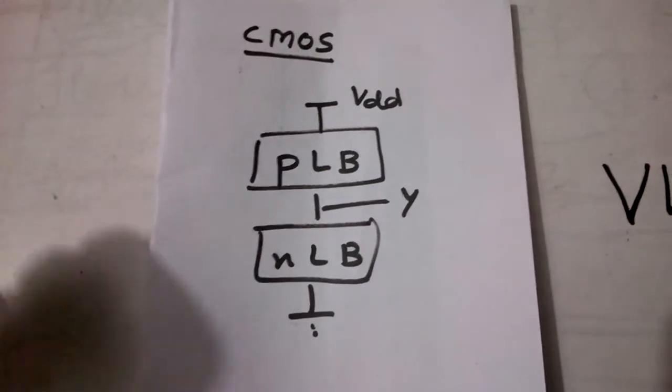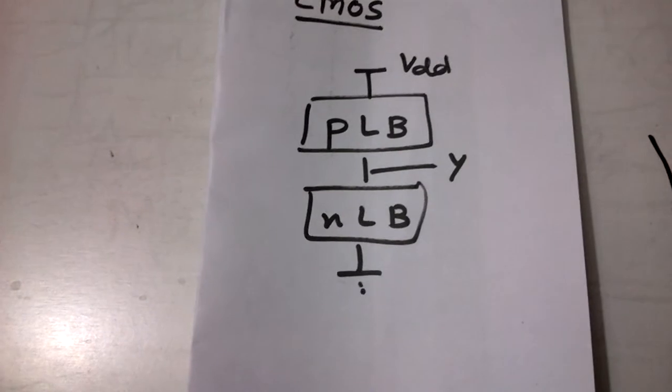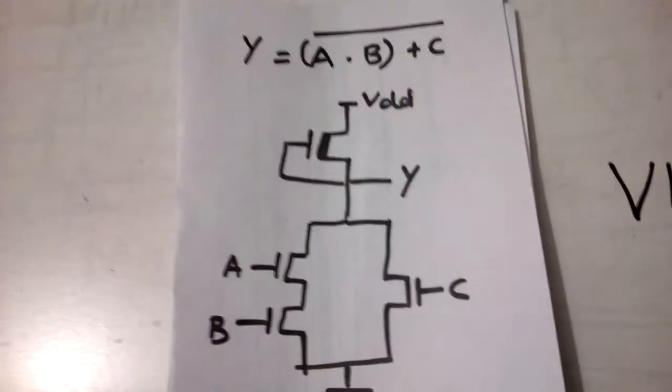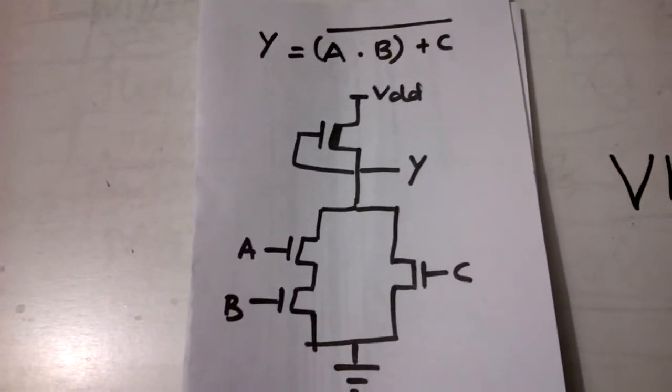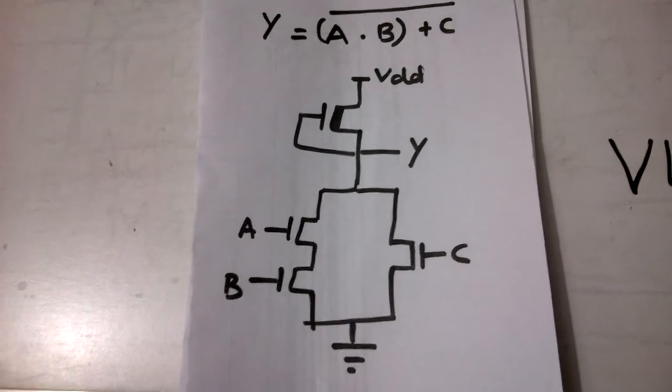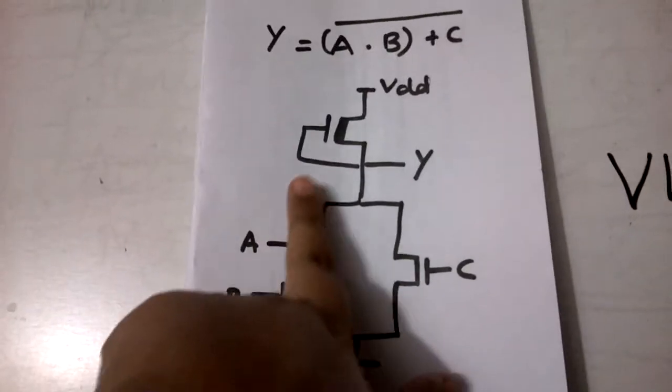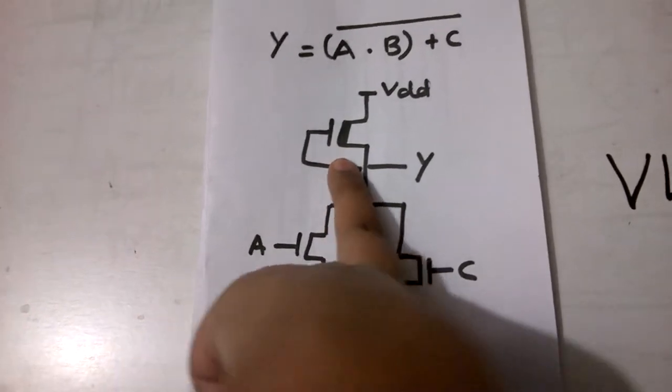We discussed one example in the last lecture. Now we will be doing another example using the NMOS family. If I want to design y equals a dot b plus c bar using the NMOS logic family, how are we going to do this? First of all we are taking a depletion type NMOS as we did in the earlier one.